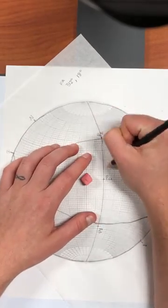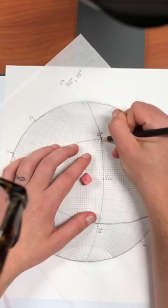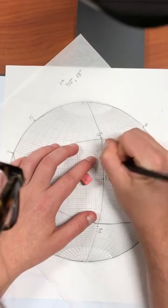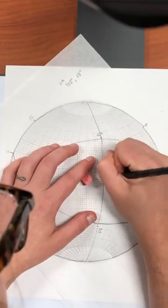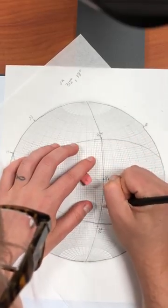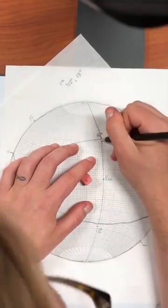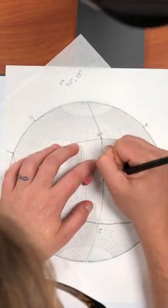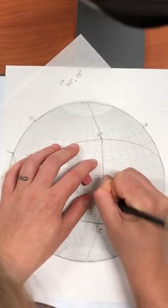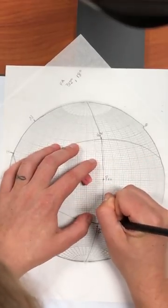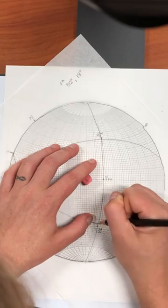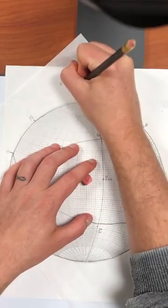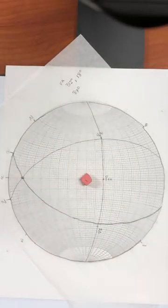All you do is go along the line and you count the number of spaces. So 2, 10 is 12, 22, 32, 42, 52, 62, 72, 82, 84, 86, 87. So the interlimb angle is 87.